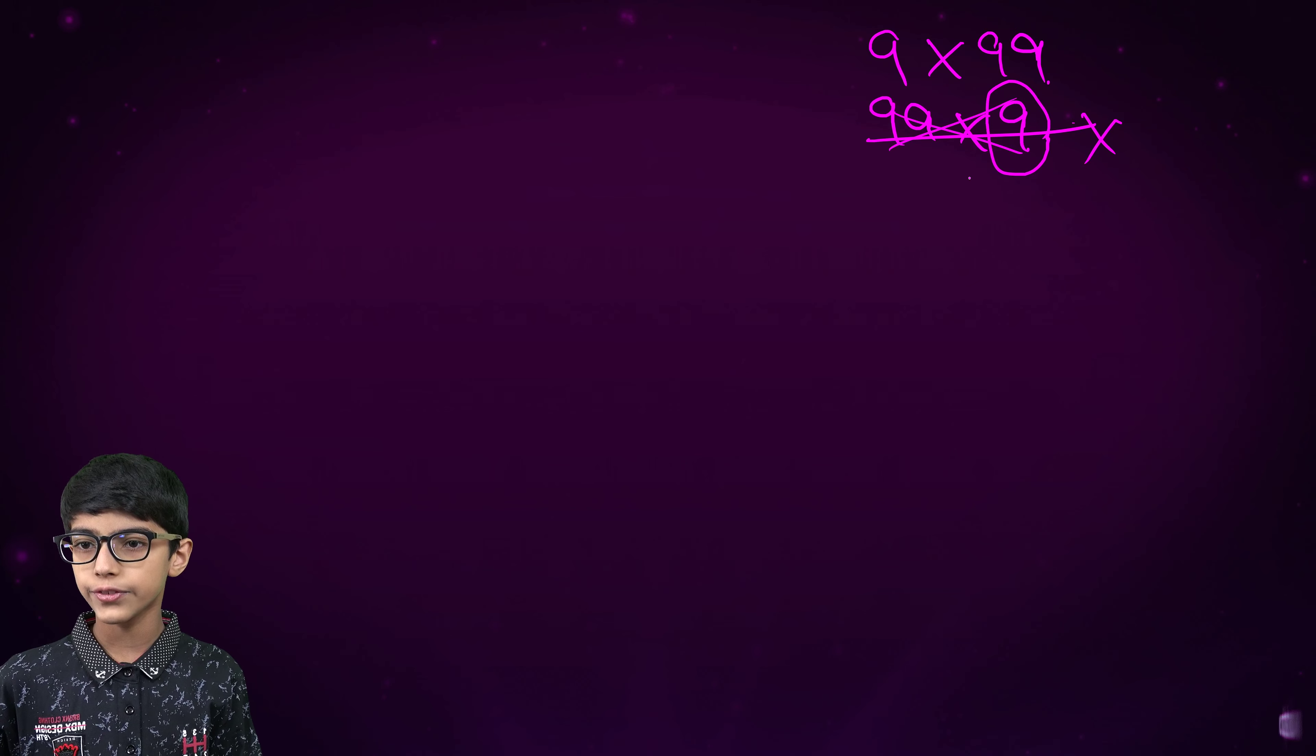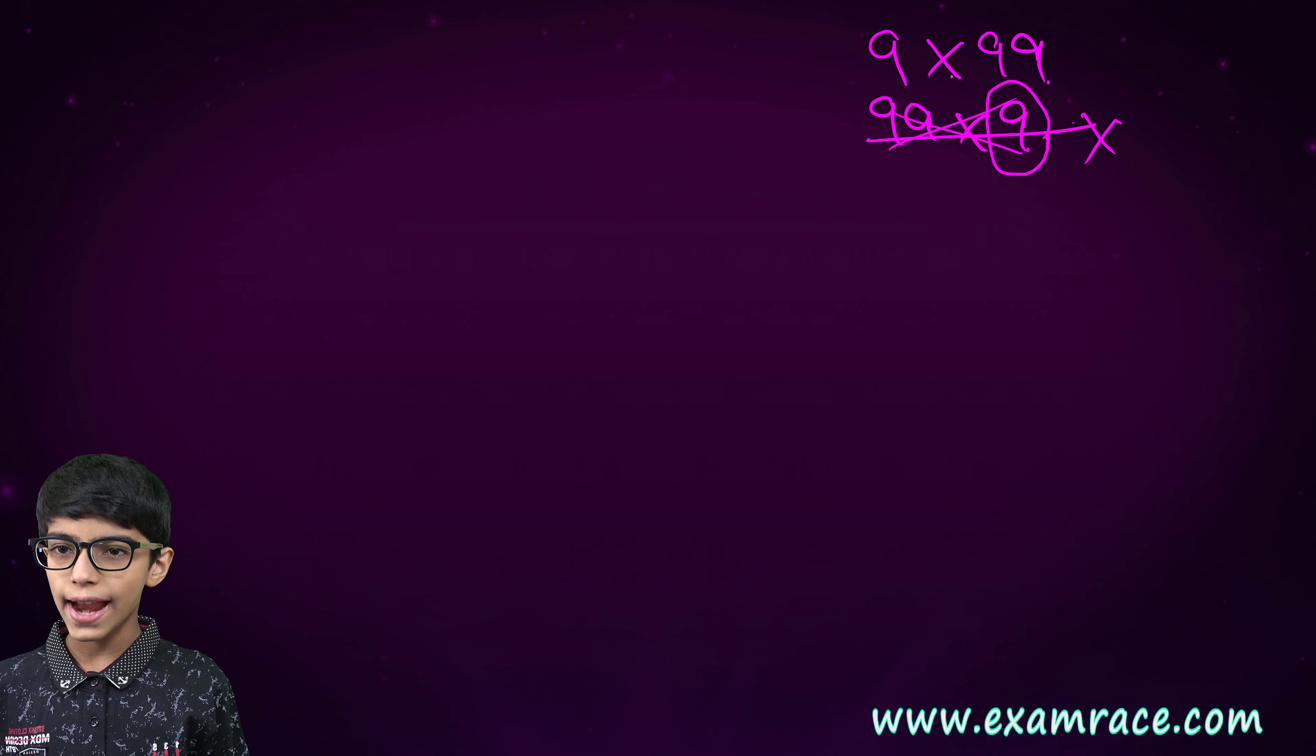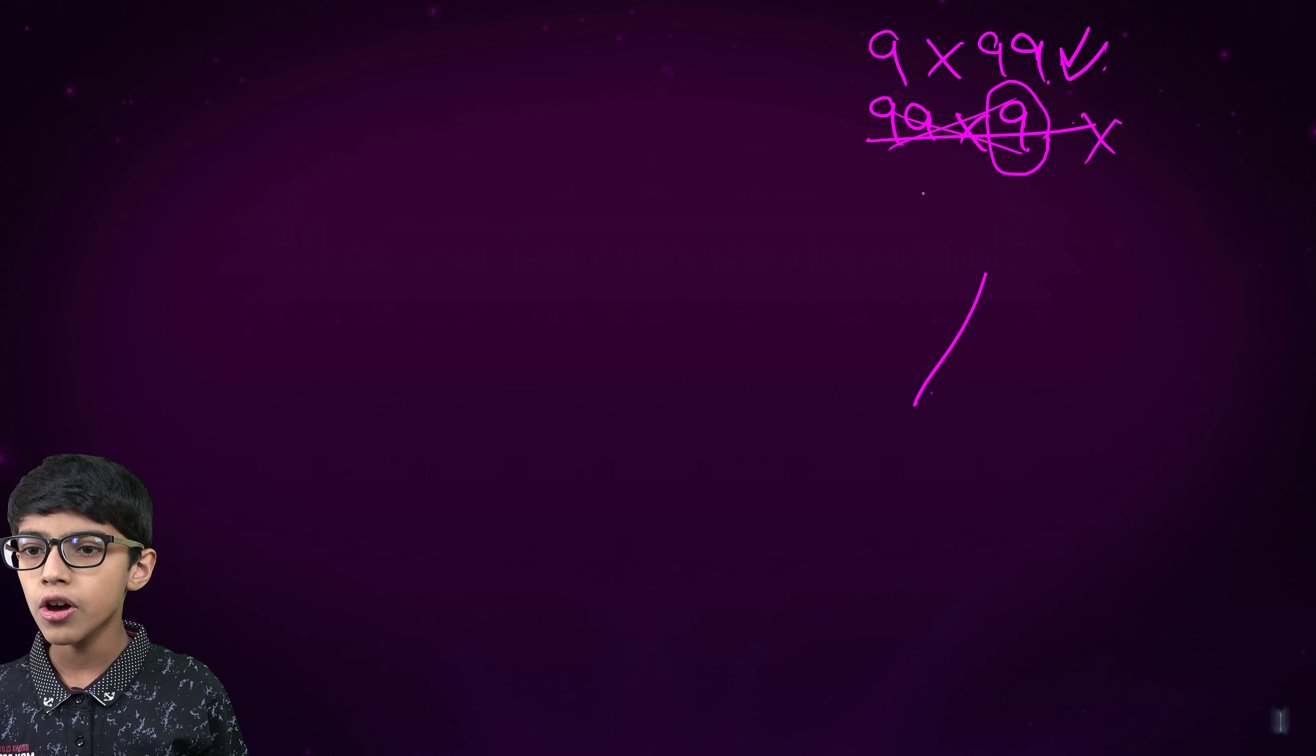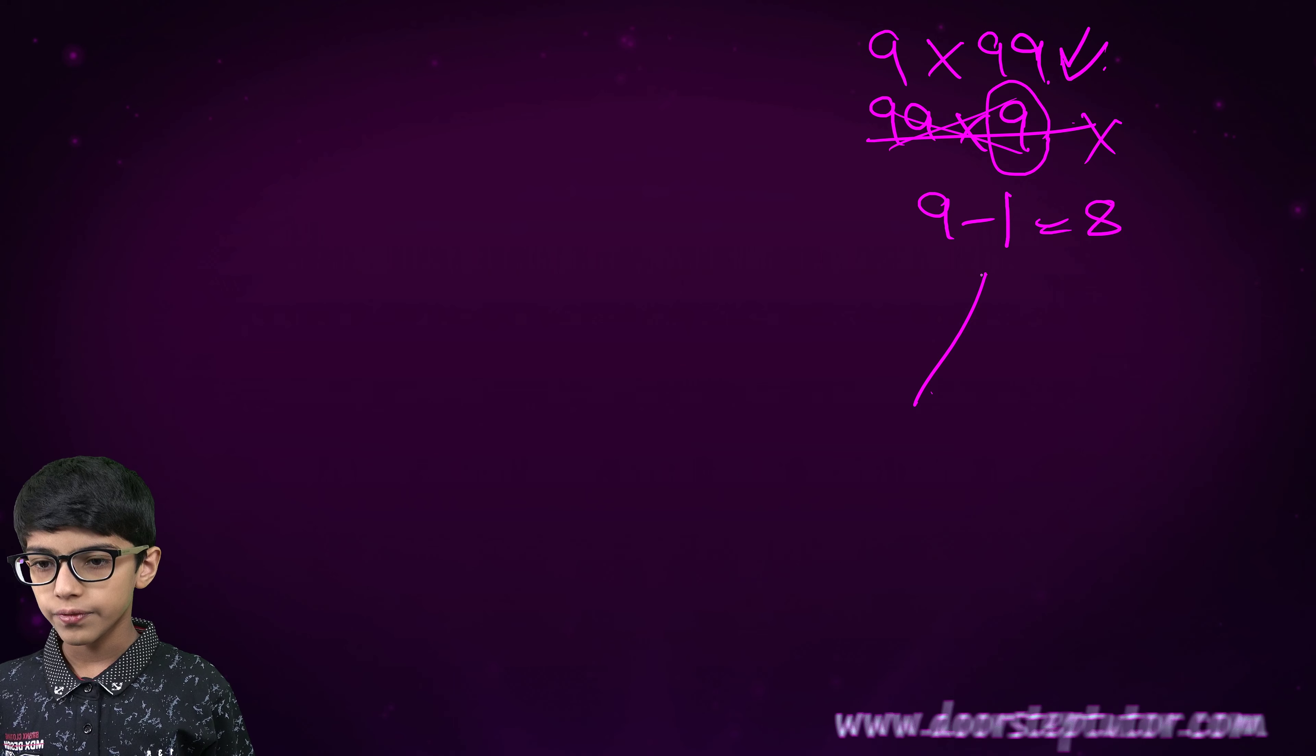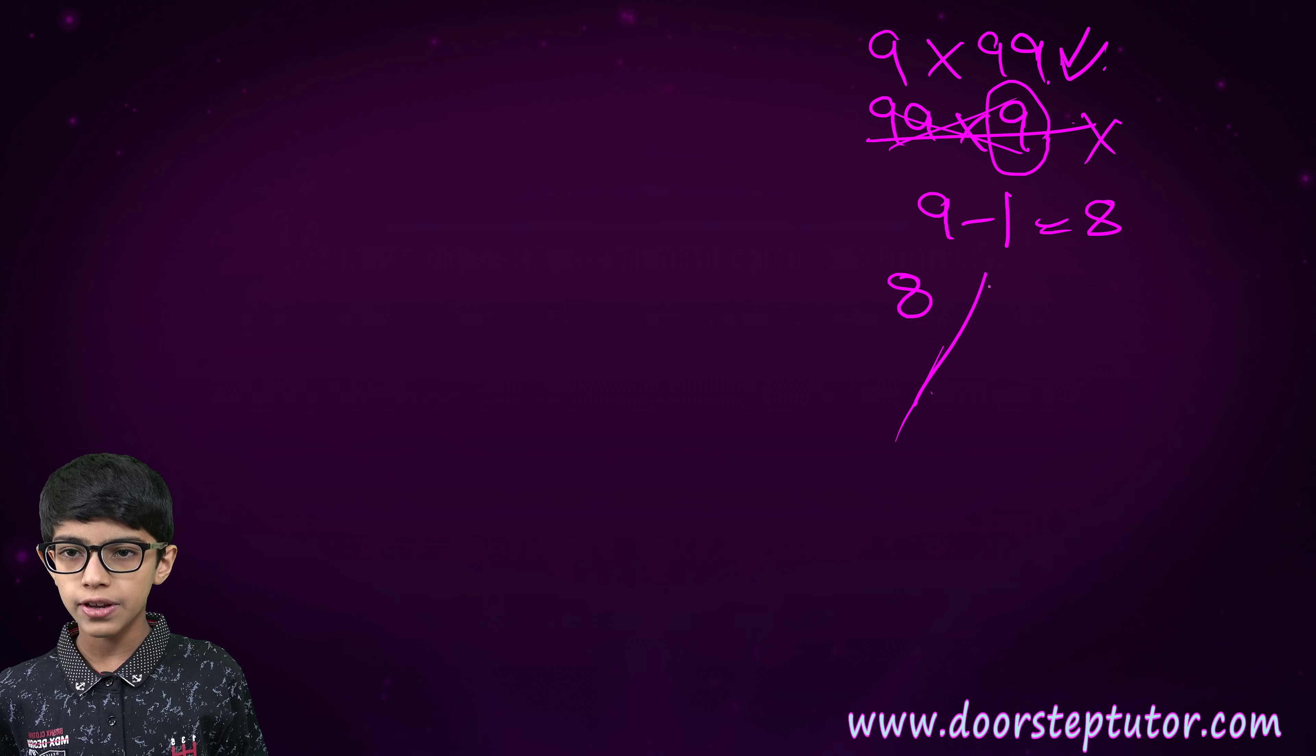Therefore, this would give us wrong answer. Therefore, 9 into 99 is correct. Now, 9 minus 1. That is 8. Then, we will divide our answer in two parts. Here, we will write 8. And in the next, 99 minus 8.